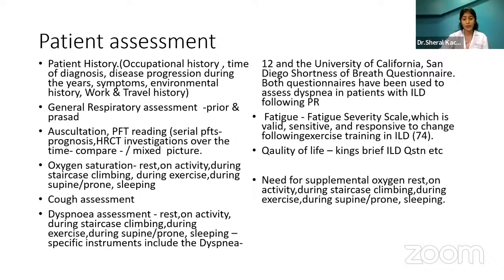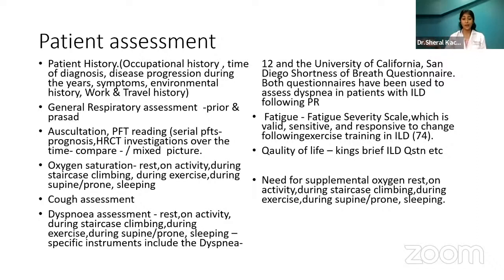HRCT investigations need to be compared — the progression has to be seen. An HRCT from two years back compared to a current one may show a lot of difference. Maybe the disease is stable, or if it's hypersensitivity pneumonitis where antigen exposure is reduced, progression may have slowed. You need to compare how much it has increased so you can educate the patient and have an idea of goals — what are you expecting, what are you working towards.